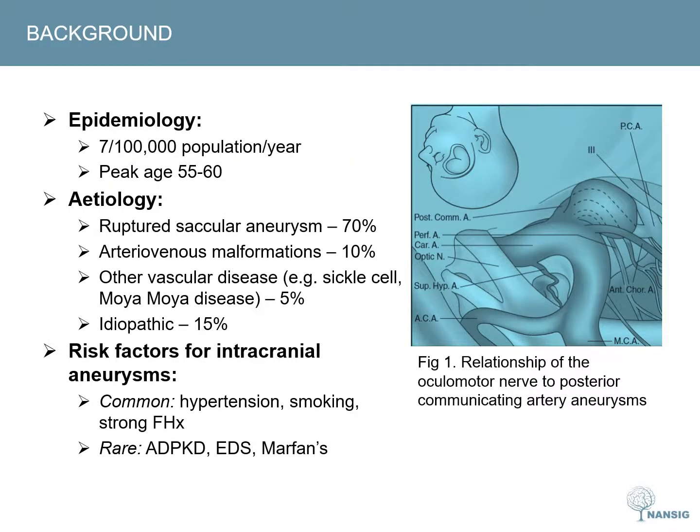The incidence of subarachnoid haemorrhage is approximately 7 per 100,000 per year in the UK. It is higher in other countries such as Japan, where it approaches 20 per 100,000. The commonest cause is a ruptured intracranial aneurysm. There are other less common vascular causes; however, 15% have no identifiable cause.